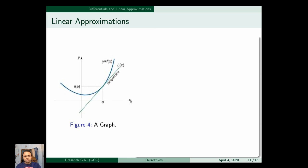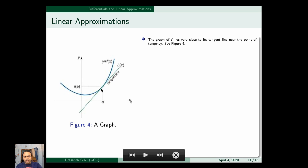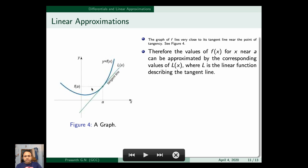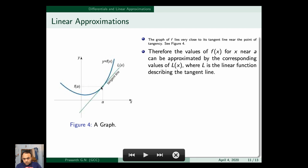The graph of f lies very close to its tangent line near the point of tangency, as you can see in the figure. We cannot find any gap between the tangent line L(x) and y = f(x). Therefore, the values of f(x) for x near a can be approximated by the corresponding values of L(x), where L is the linear function describing the tangent line. Since we are near the point, there is not much difference between the line and the curve, so we can assume f(x) ≈ L(x) very near to a.